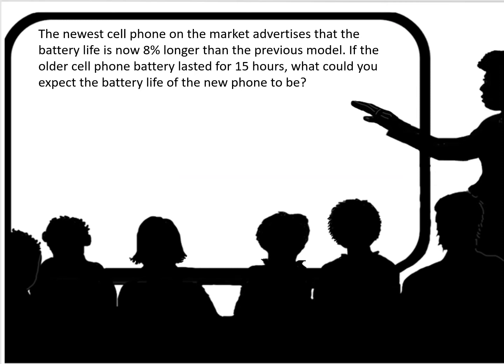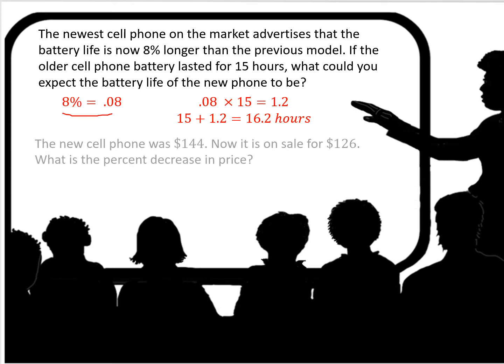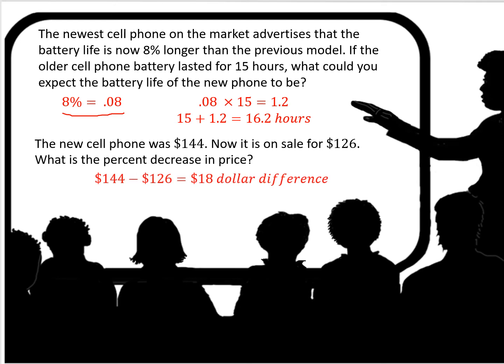Here's another problem. The newest cell phone on the market advertises that the battery life is 8% longer than the previous model. If the older cell phone battery lasted 15 hours, what could you expect the battery life of the new phone to be? 8% in decimal form is 0.08. So 0.08 times 15 is 1.2. You add the 1.2 hours to the 15 hours and you would expect the new phone to last 16.2 hours.